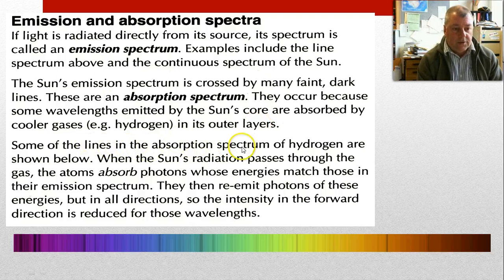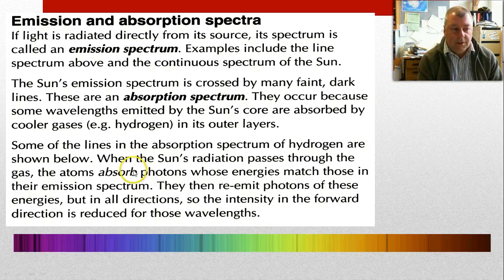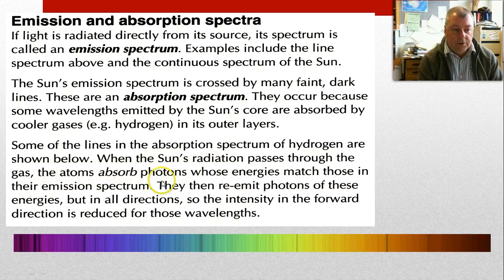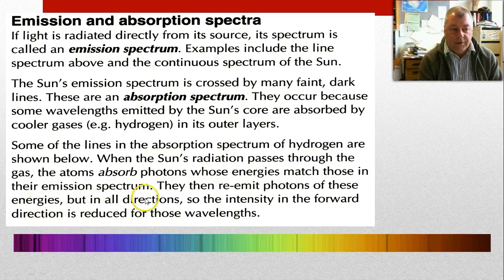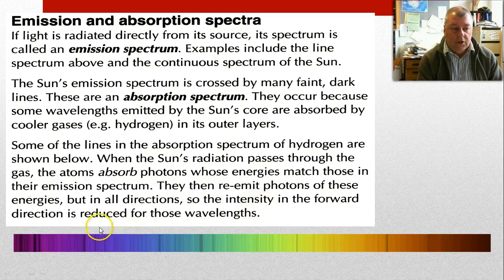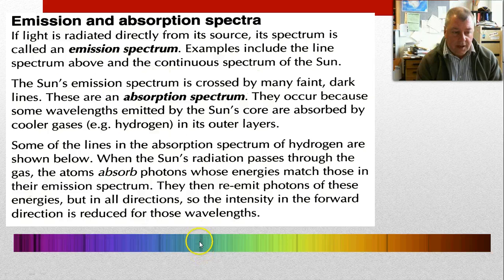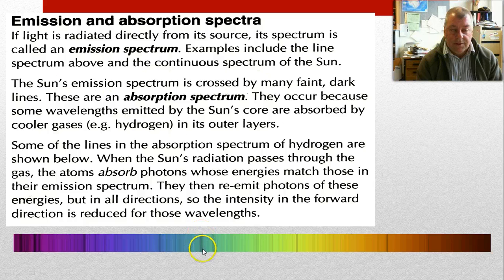Some of the lines in the absorption spectrum of hydrogen are shown below, but we couldn't see them because they're hidden with all the others. When the sun's radiation passes through the gas, the atoms absorb photons whose energy matches those in their emission spectrum. They then re-emit photons of these energies. But because they're emitting them in all directions, the intensity in the forward direction is reduced for these wavelengths. So though these are dark lines, they're not completely black. There are some photons coming through, but they're greatly diminished.